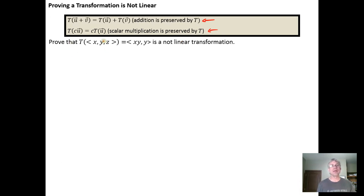For example, I could take this transformation, which is a transformation from R3 because we have a three-component vector into R2 because this vector here is a two-component vector.